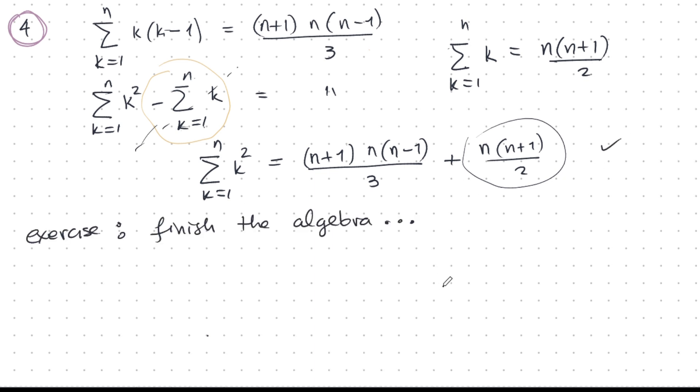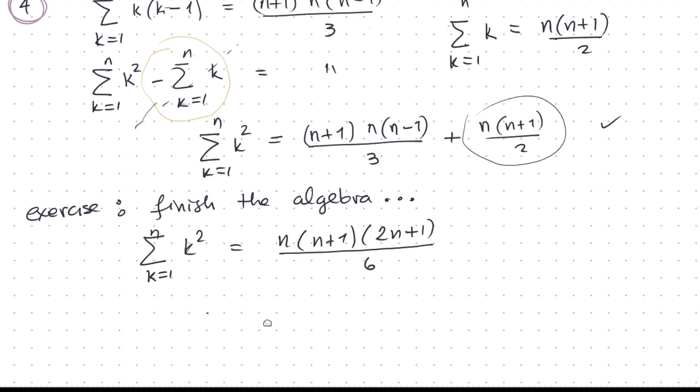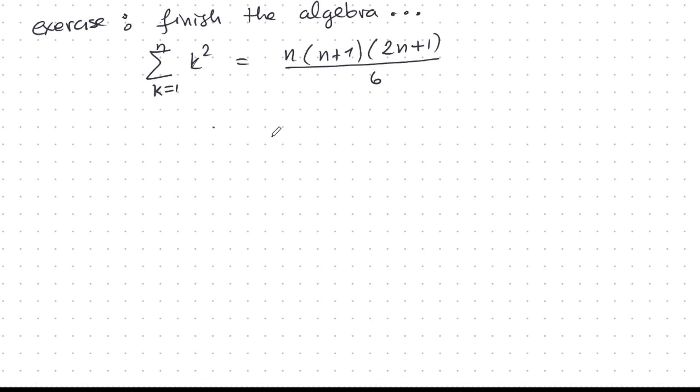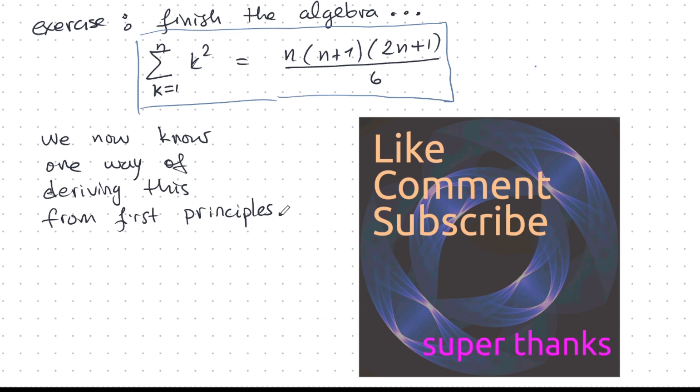And as an exercise for you, you can finish the algebra. It's just a little bit of fun algebra to get my final answer, which is this beautiful formula here. And so now we have done it. We have figured out a constructive way to derive it. We now know one way of deriving this beautiful identity from first principles. And I'm sure there are many other similar identities that you can derive using these techniques. Why don't you look into that?